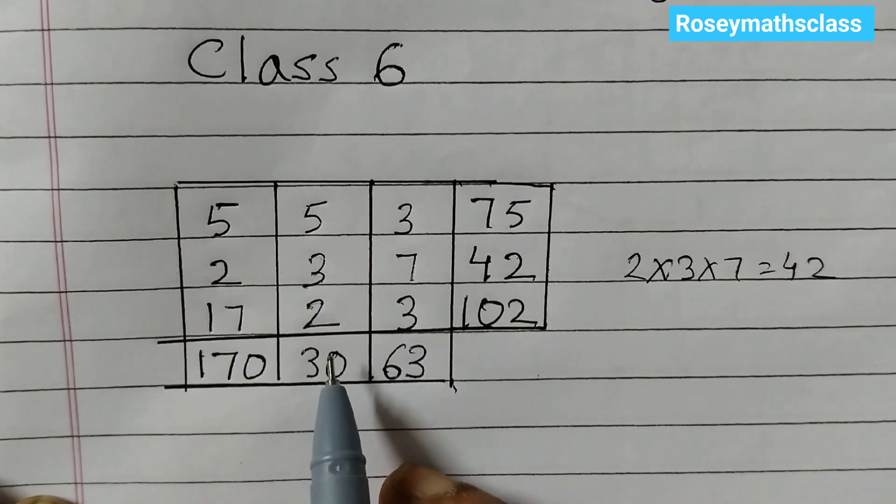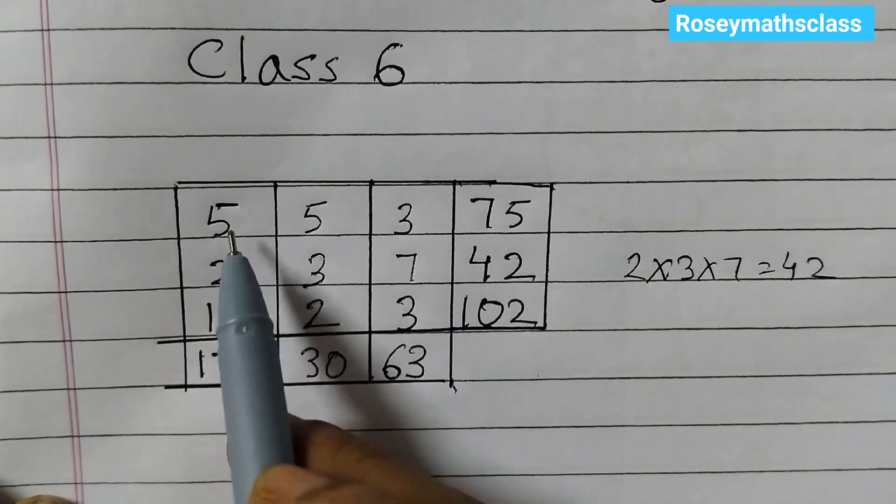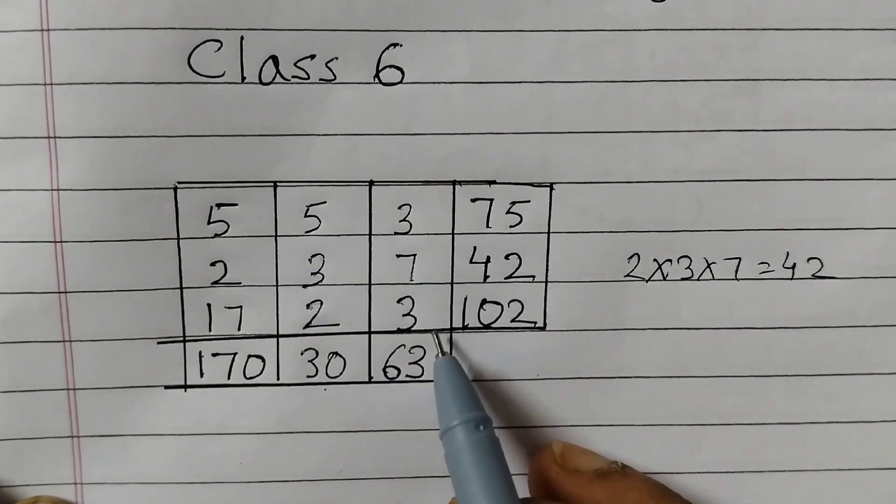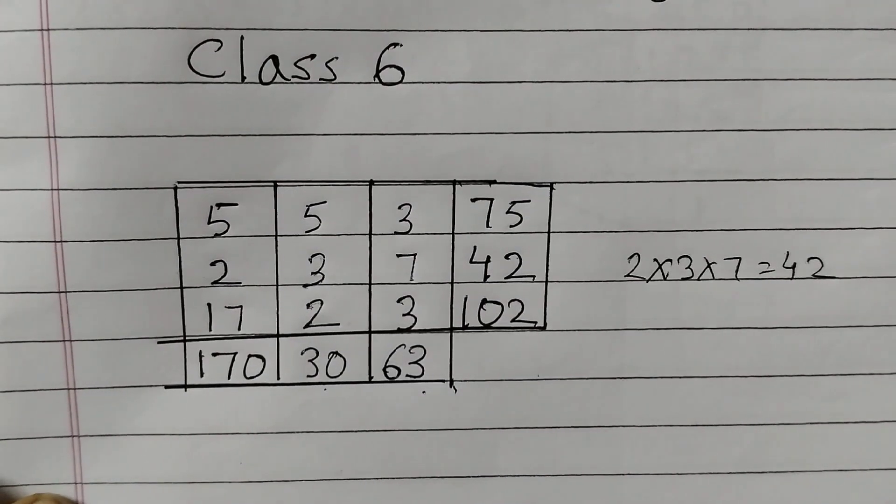So you can see here all these numbers are prime numbers, and also when we multiply these three numbers we get 75, these three numbers 170, same way these three numbers 30, these three numbers 63. Well, that's all for now. See you all in the next video.